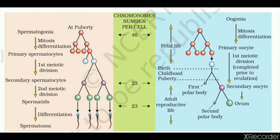At puberty, all the sperm mother cells, known as spermatogonia, undergo repeated mitosis for differentiation. During that time, the chromosome number is 46. The sperm mother cell differentiates into a primary spermatocyte, and the ploidy at this stage is again 46.